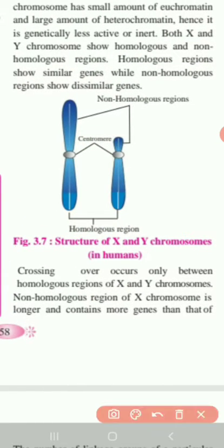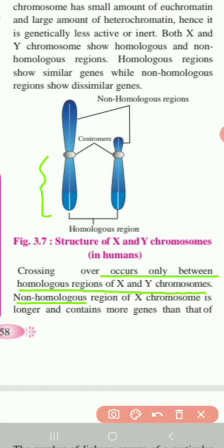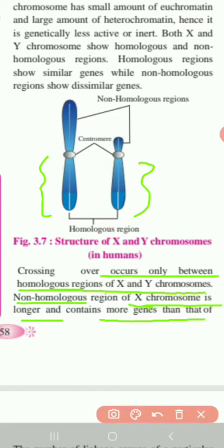Crossing over occurs only between the homologous region of X and Y chromosomes. The region of X chromosome is larger and contains more genes than Y chromosome.